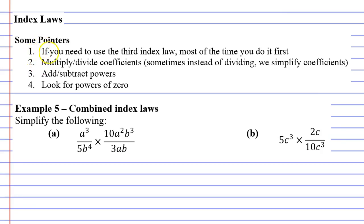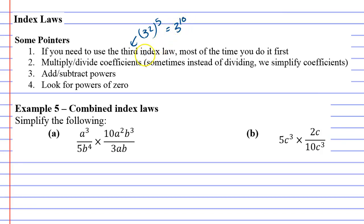You'll notice step 1 says if you need to use the third index law — and in case you've forgotten, the third index law is the one with brackets. So if I had 3 squared to the power of 5, I would multiply, giving me 3 to the power of 10. This index law should always be done first, or most of the time at least.